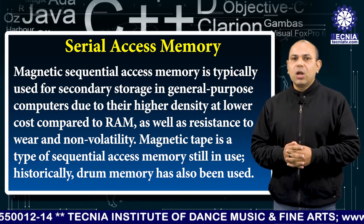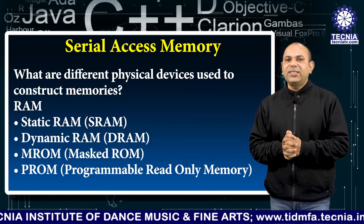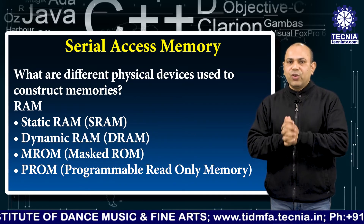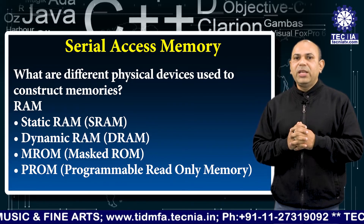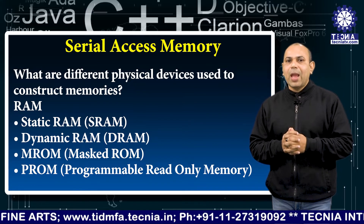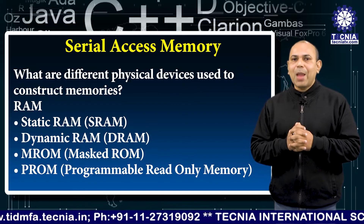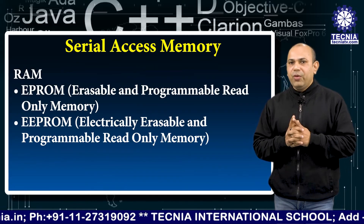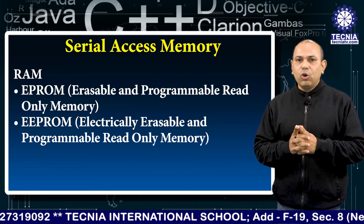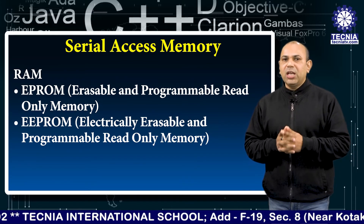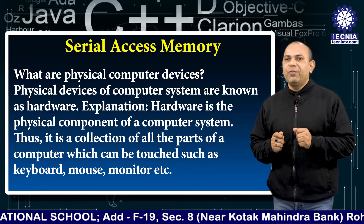What are the different physical devices used to construct memories? RAM — static RAM (SRAM), dynamic RAM (DRAM), MROM (masked ROM), PROM (programmable read-only memory), EPROM (erasable programmable read-only memory), and EEPROM (electronically erasable programmable read-only memory).